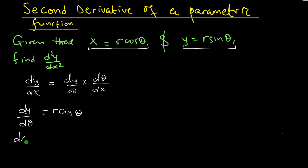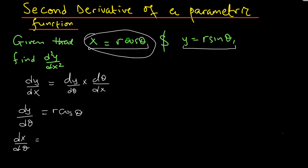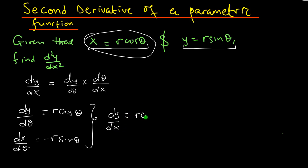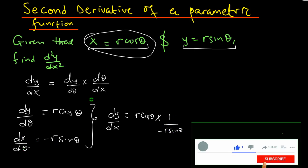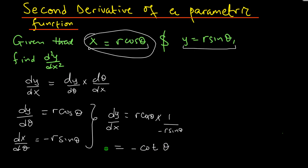Now let's find dx over d theta. Here is the equation for x: r is a constant, and the derivative of cosine is negative sine, so dx over d theta equals negative r sine of theta. Using these two, I can find the first derivative dy over dx — that's r cosine of theta times 1 over negative r sine of theta, where d theta over dx is the reciprocal of dx over d theta. This gives us negative cotangent of theta.